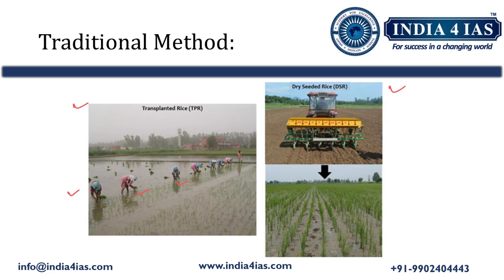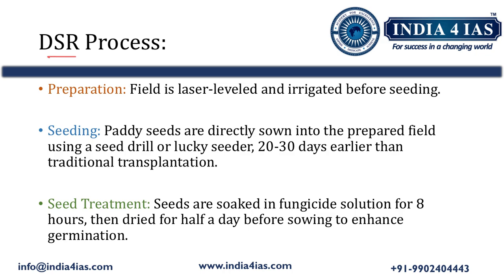The traditional method of paddy cultivation maximizes yields and crop health, but it is labor intensive and water intensive. In direct seeding of rice, the agriculture field is laser leveled and irrigated before seeding. Paddy seeds are directly sown into the prepared field using a seed drill or a lucky seeder, 20 to 30 days earlier than the traditional transplantation method.